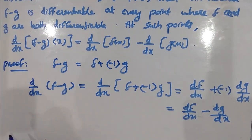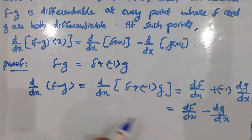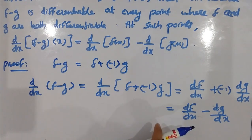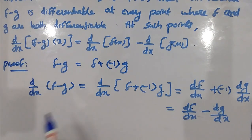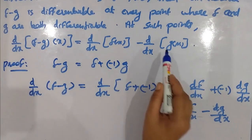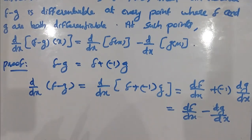Therefore, d by dx of f minus g of x equals d by dx of f of x minus d by dx of g of x. Therefore, you can see the result. We have completed two corollaries.